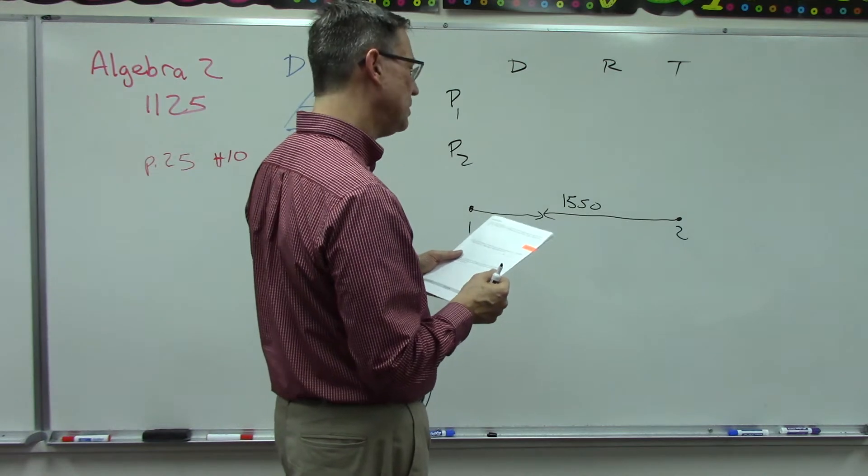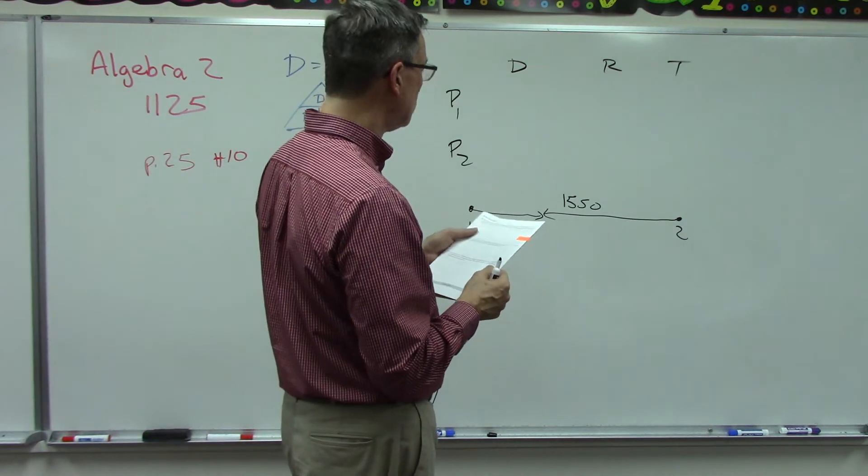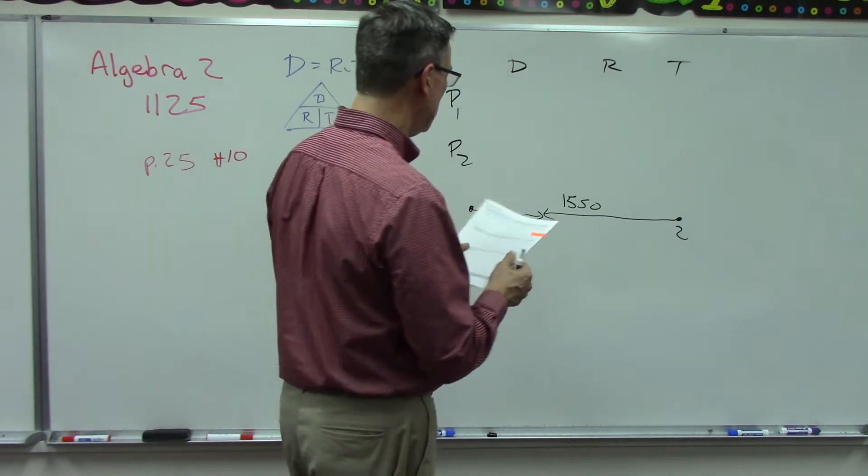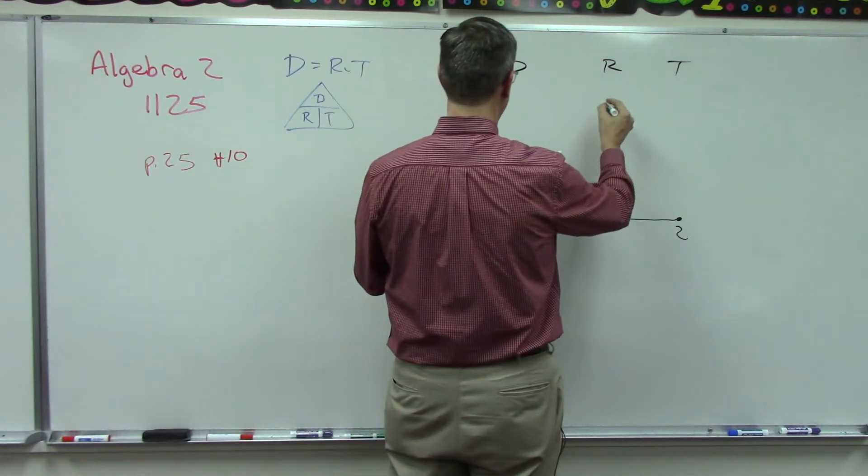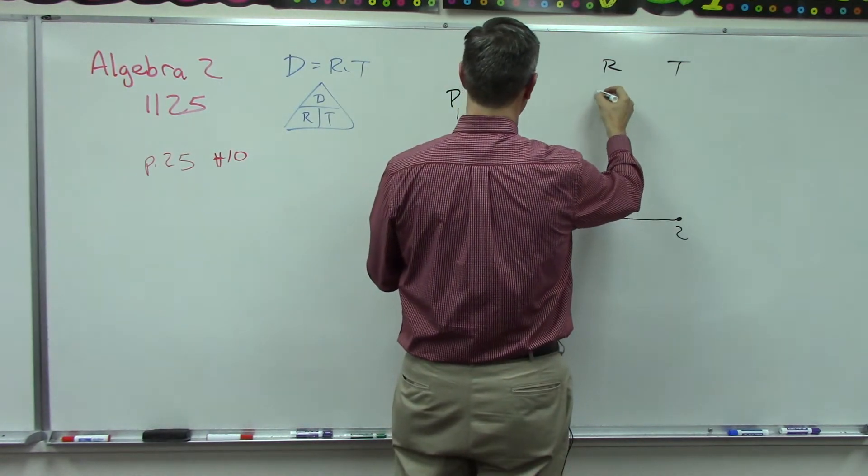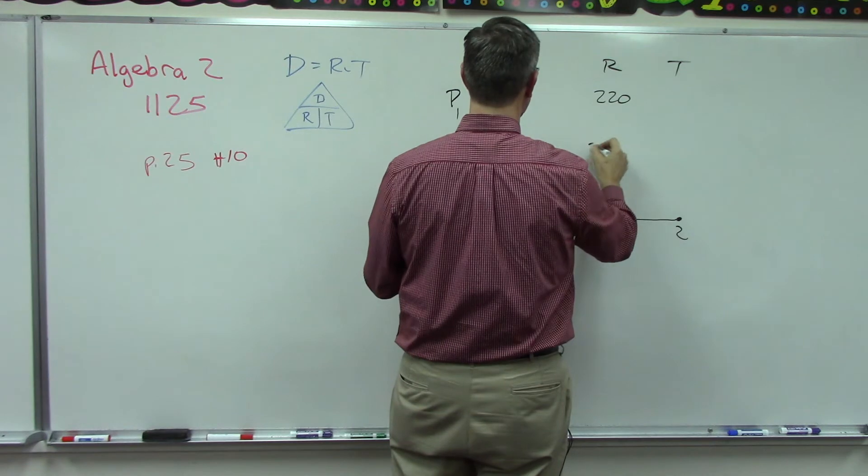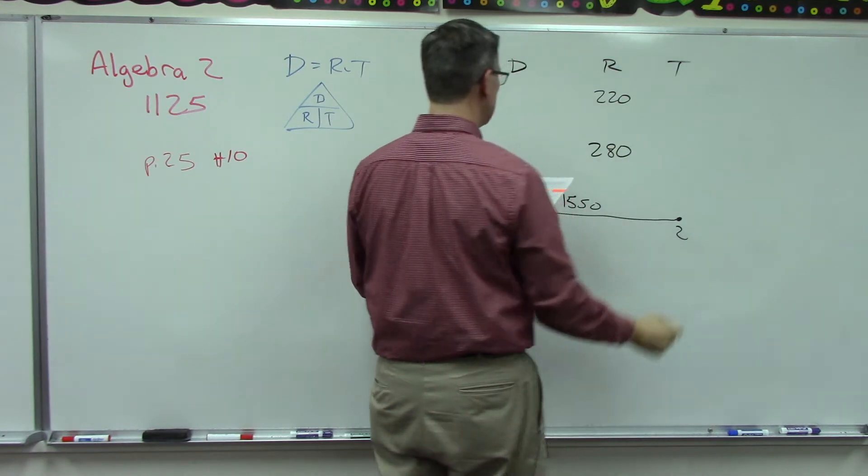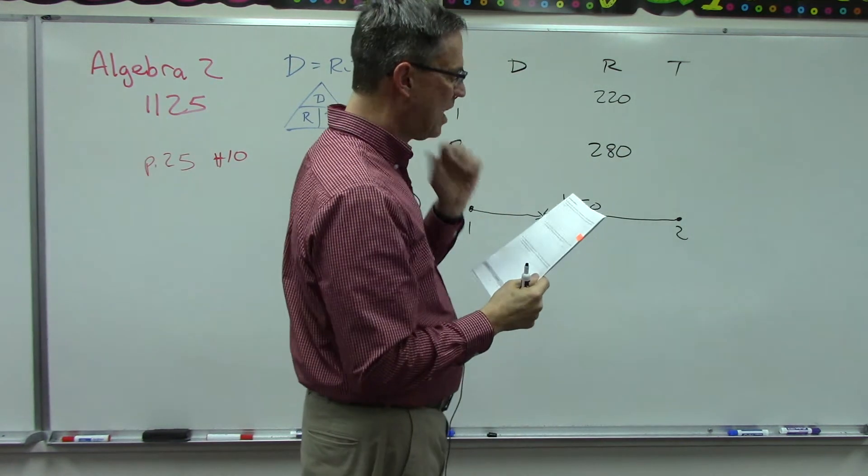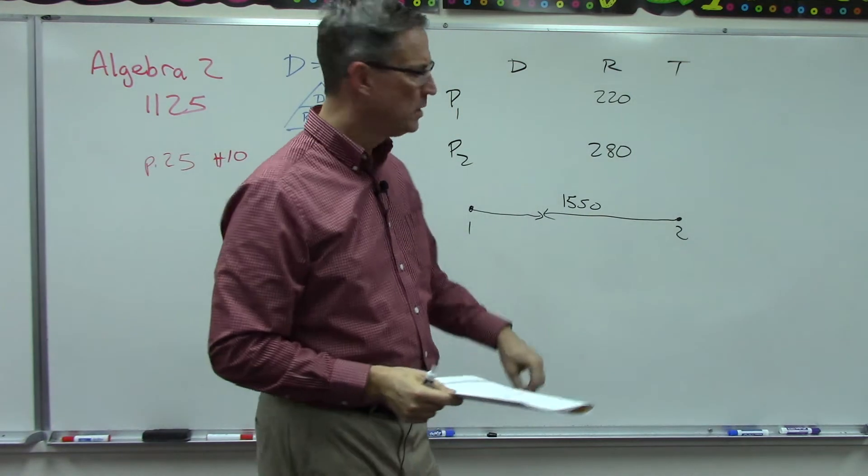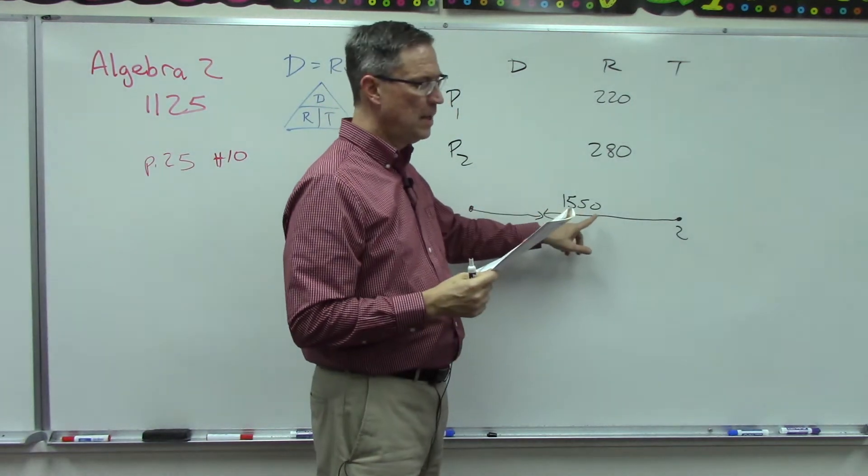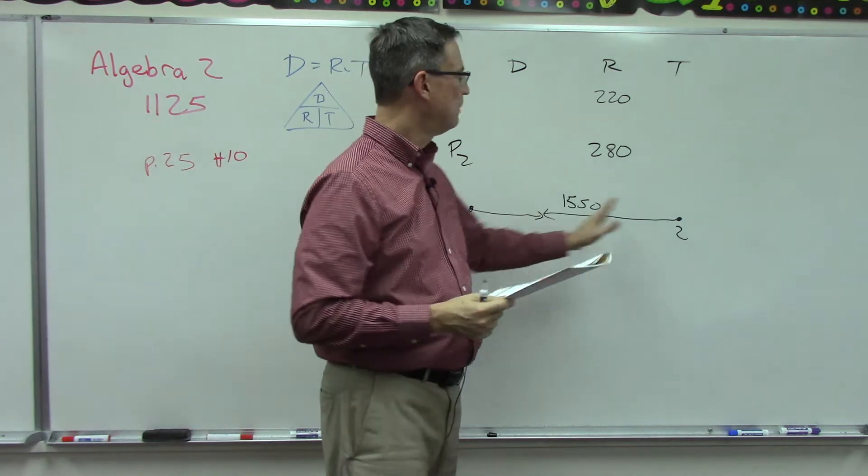Plane A is traveling faster. So we know the two rates: plane A is 220 and B is 280. The trick is figuring out what is the distance because the 1550 is the distance completely between those two points.